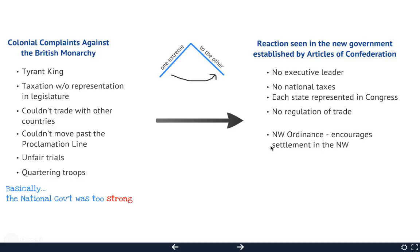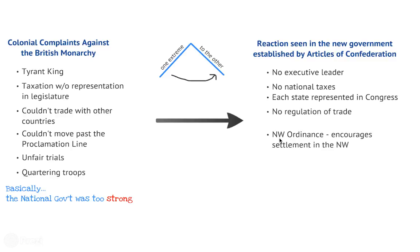There was going to be no regulation of trade — you could do whatever you wanted. The only real success under the Articles of Confederation was the establishment of the Northwest Ordinance. It told people they could go out to places like Ohio and Illinois and settle, but it did not allow slavery out there, which ends up being a big deal later on. This needs a star next to it — it is the only real success of the Articles of Confederation.